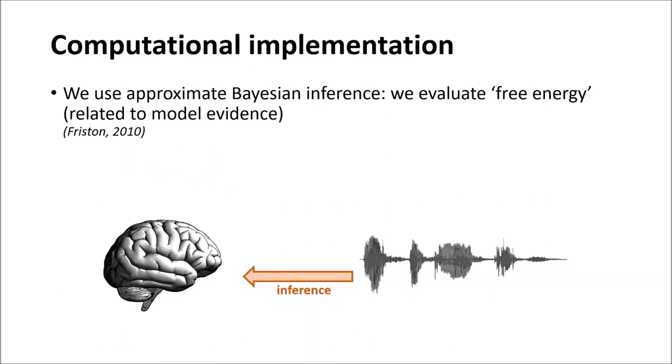Computationally we use approximate Bayesian inference and this relies on evaluating a quantity called free energy which is related to model evidence. As you can see from this equation, free energy can be written as a trade-off between accuracy and complexity. Essentially this means that people update their beliefs to provide the simplest and most accurate explanation of sensory data. By minimizing free energy they simultaneously maximize their evidence for their generative model of the world.